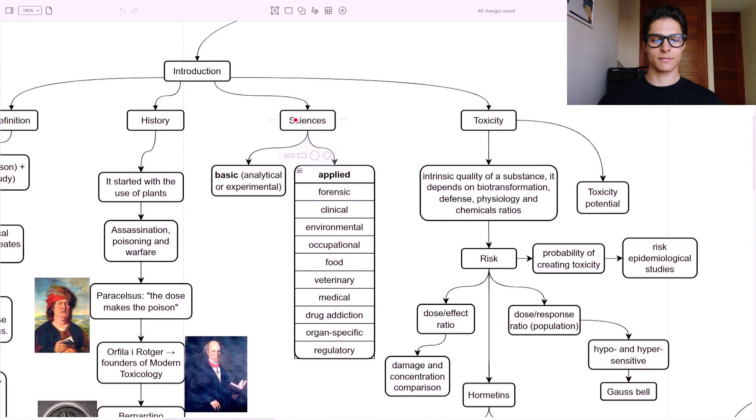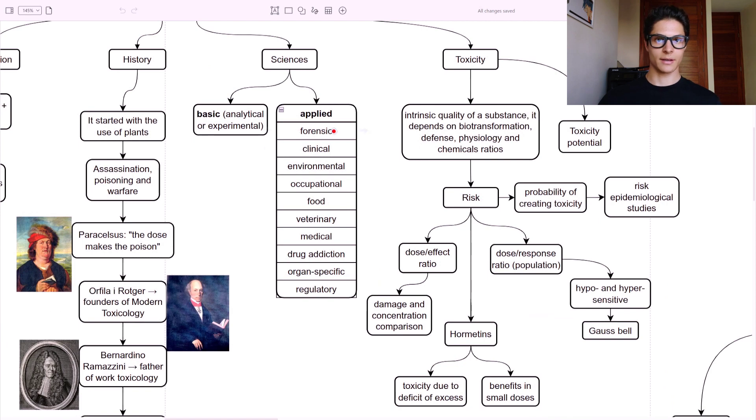So sciences - we have different types of sciences. Basic sciences, which can be analytical or experimental, or applied sciences. Applied sciences means that we can apply toxicology in various areas. As you can see, forensic is used to solve crimes. Clinical, environmental, and inside of environmental, a very important one - the food one. Occupational, so Bernardino Ramazzini. Veterinary, medical, drug addiction, organ-specific science, and also regulatory science or the law.